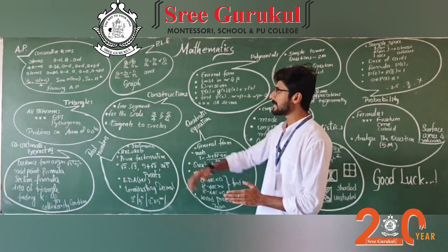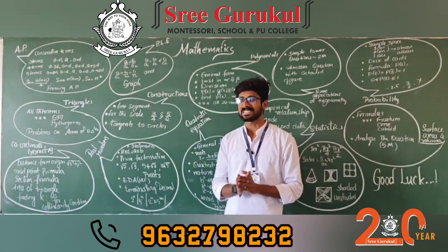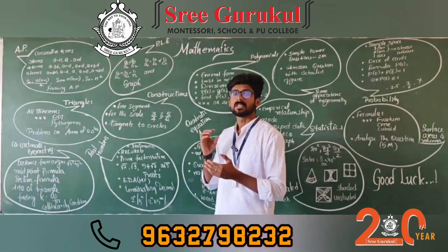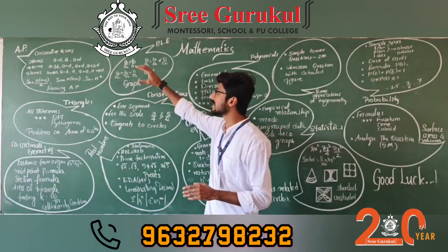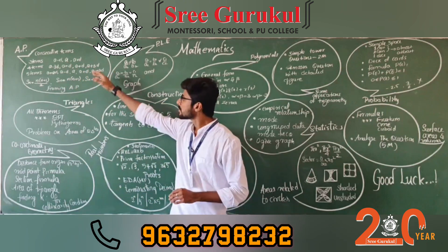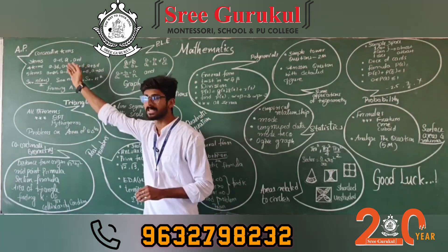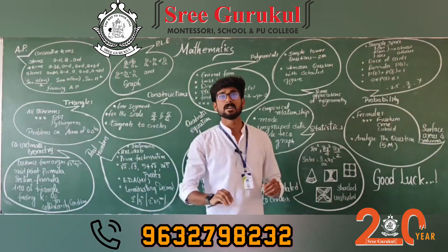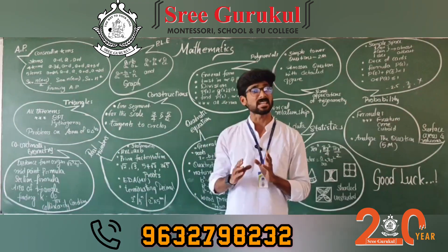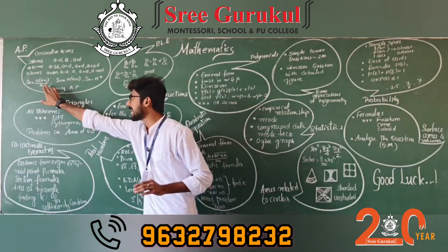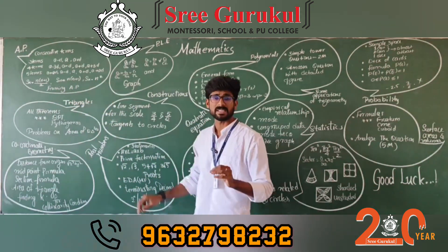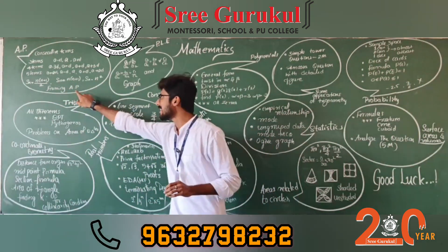Let's start with the AP chapter. In AP, the main highlights are knowing how to write 'a' and 'd' and all those basic things. There are some word problems where we have to consider consecutive terms — 3 terms, 4 terms, and 5 terms. You should know how to consider these. Also, we have the Sn formula, which can be asked for MCQs: the sum of first n natural numbers is n(n+1)/2, for even numbers it is n(n+1), and for odd numbers it is n squared.